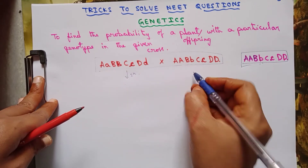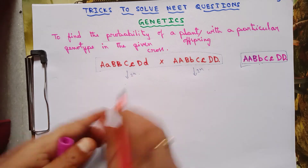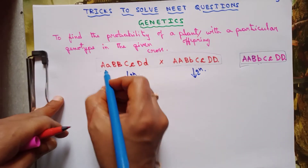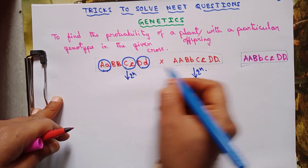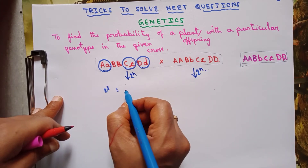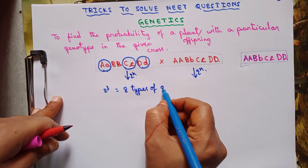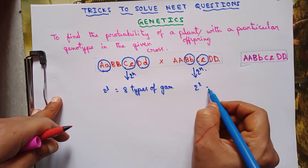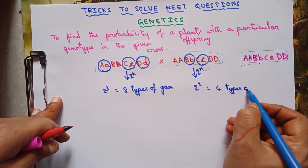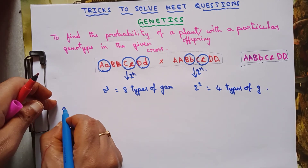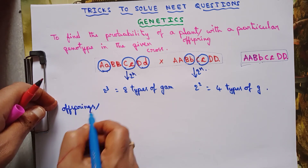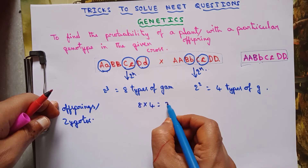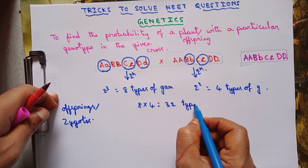To find types of gametes we use 2^n. From plant one, n = 3 heterozygotes, so 2^3 = 8 types of gametes. From plant two, n = 2 heterozygotes, so 2^2 = 4 types of gametes. Total types of offsprings or zygotes formed = 8 × 4 = 32 types.